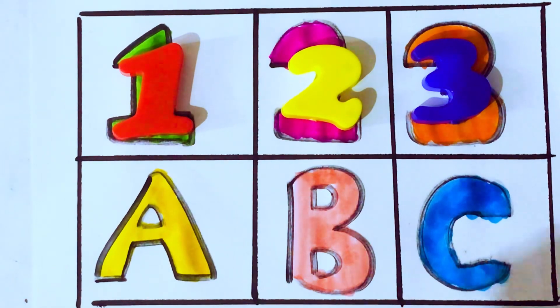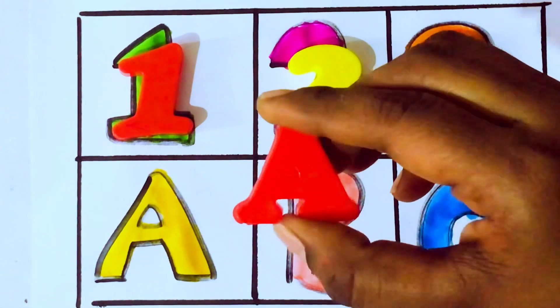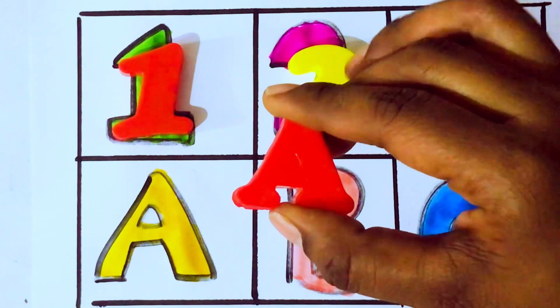Next, alphabets. A. Which letter kids? A. A for Apple. A, P, P, L, E, Apple.